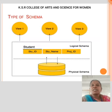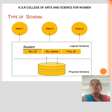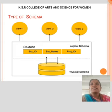Types of Schema: A database schema can be divided broadly into two categories. The first one is Physical Schema and the second one is Logical Schema. Physical Schema pertains to the actual storage of data and its form of storage like files, indices, etc. It defines how the data will be stored in the secondary storage. Logical Database Schema defines all the logical constraints that need to be applied on the data stored. It defines tables, views and integrity constraints.